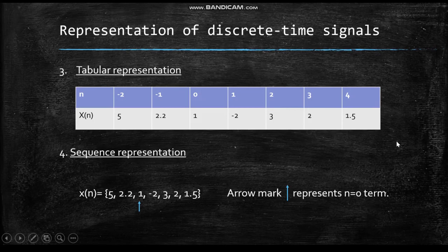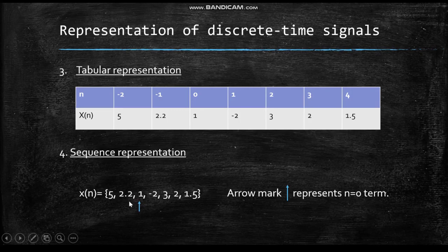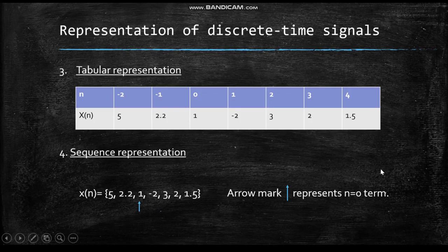The fourth method is sequential representation. It is written inside a curly bracket where x(n) = {5, 2.2, 1, −2, 3, 2, 1.5}. Here an arrow mark is used to represent the n = 0 term. It is very useful to use this arrow mark while drawing the discrete time sequence.